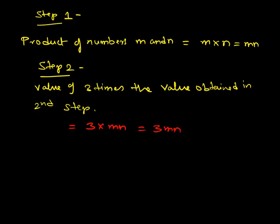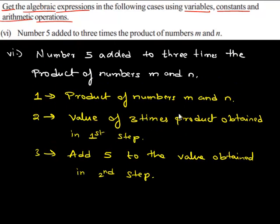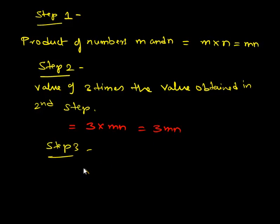Now the last step is we have to add 5 to the value obtained in the second step. So that is we have to add 5 to 3MN. So we get 5 when added to 3MN, then we get 5 plus 3MN.